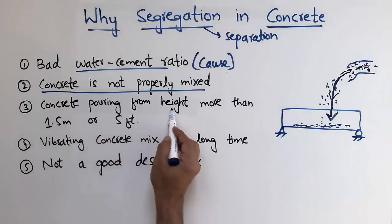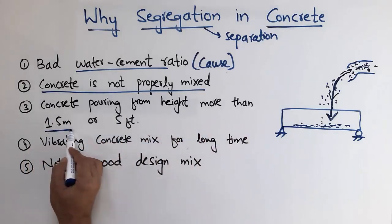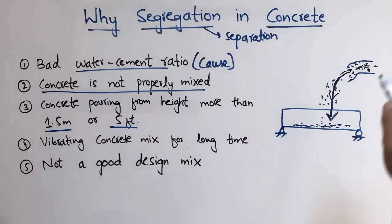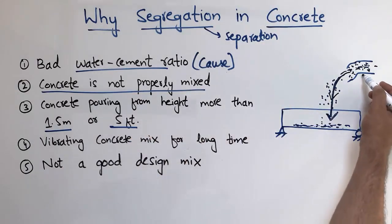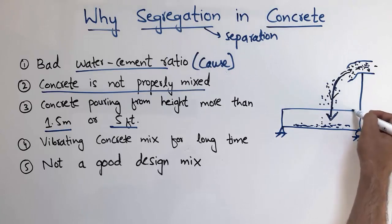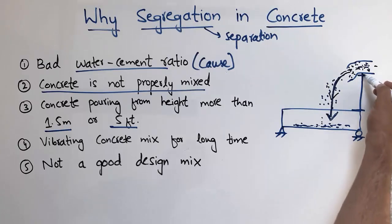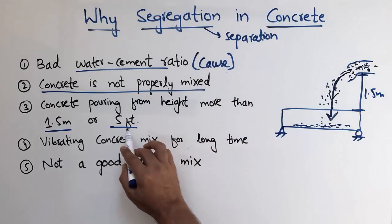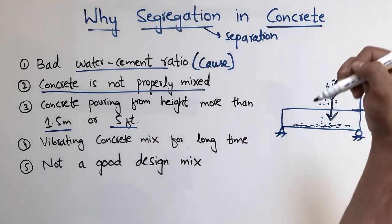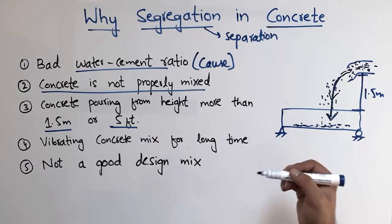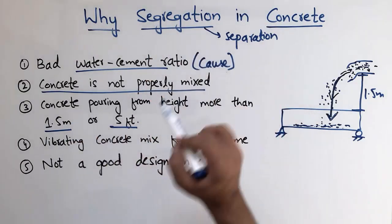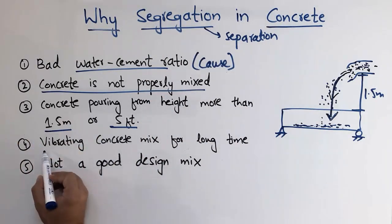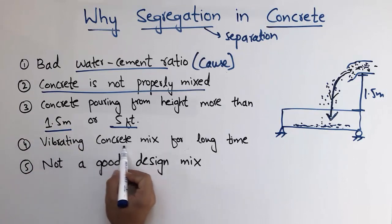The third important factor is pouring concrete from a height greater than 1.5 meters or 5 feet. This is a standard recommendation from different codes — when pouring concrete into a member, the height must not exceed 1.5 meters or 5 feet. It should always be less than that to avoid segregation in concrete.